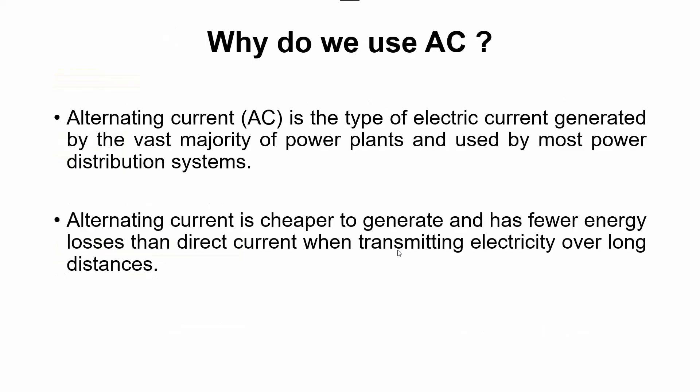Now, why do we use AC? What is the problem with using DC? Alternating current is the type of electric current generated by the vast majority of power plants and used by most power distribution systems. The reason is that when transferring alternating current over long distances, the energy loss is very low. But if you use DC, the loss is much more. Additionally, alternating current is cheaper to generate and has fewer energy losses than direct current. That is why we use alternating current in our homes and home appliances.